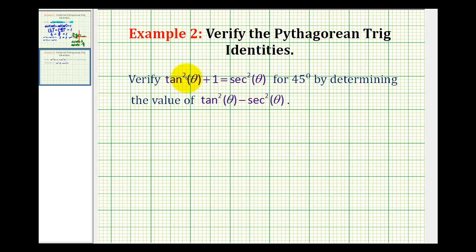Looking at this identity, if we were to subtract sec²(θ) on both sides, and then subtract 1 on both sides, we would have tan²(θ) - sec²(θ) = -1. So when they ask us to verify this, we know that it should simplify to -1 for any angle, but for this example, we'll focus only on when θ is 45 degrees. Let's start by determining the tangent and secant of 45 degrees.